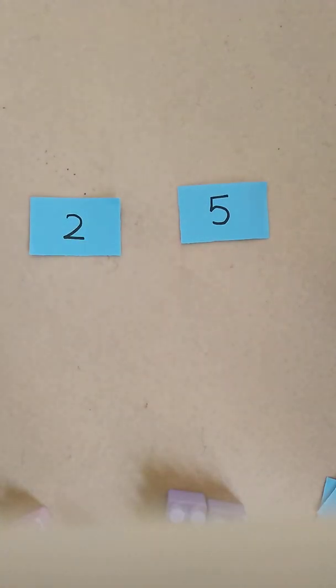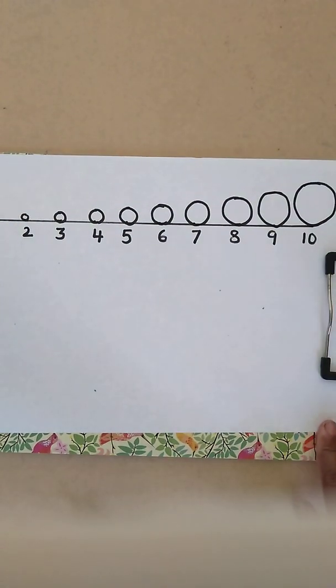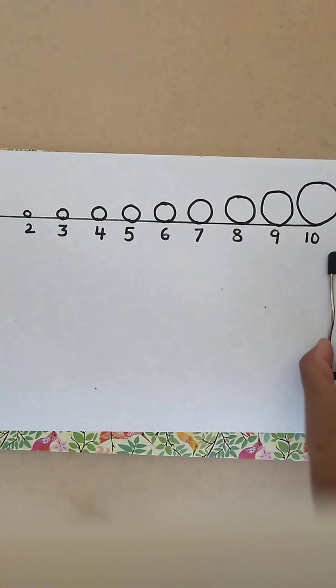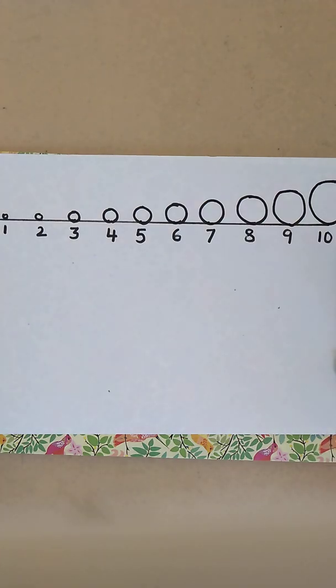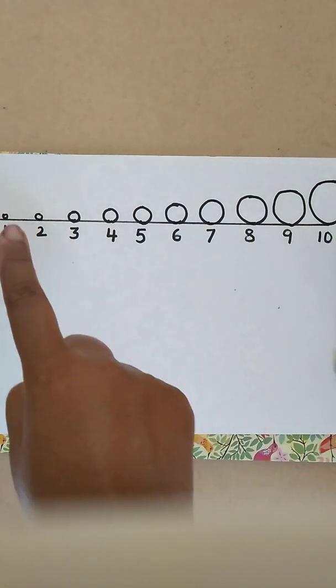Now after relating it with the objects, then you need to reinforce the same thing with any worksheets. When a child has a pen or paper, how will the child remember without any objects? Now I have taken a number line from 1 to 10 and I have drawn circles according to the size.